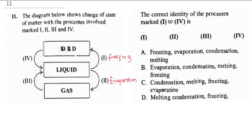When you have gas becoming liquid, this is called condensation — that's when you have a vapor and it becomes liquid. Now when you have ice becoming water, it's called melting. So with this we have I to be freezing, II to be evaporation, III to be condensation, and IV to be melting. So the correct answer is A.